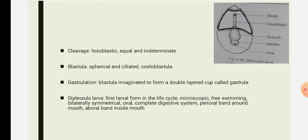After the blastula, gastrulation occurs: the blastula invaginates to form a double-layered cup called the gastrula. The two layers are the outer ectoderm and the inner endoderm. The cavity of the gastrula is called the archenteron, and it opens to the outside by an opening called the blastopore. Endoderm at the inner end gives off cells into the blastocoele and these cells form the mesoderm. The archenteron produces two pouches which are pinched off as two sacs, and these sacs develop into the coelom and the water vascular system.